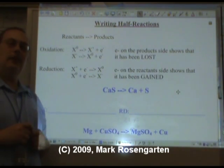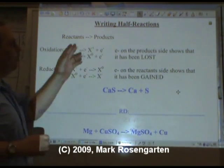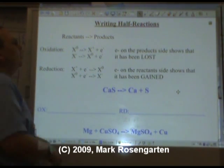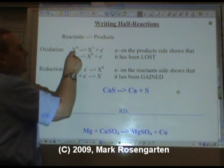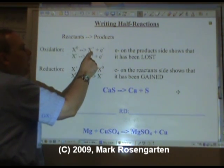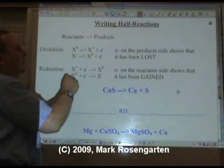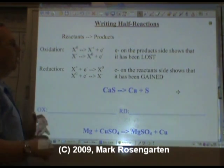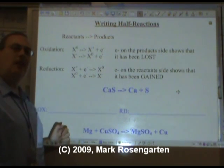Now let's take what you just learned about who's oxidized and reduced and take it one further step in writing half-reactions. Reactants turn into products. In oxidation, the reactants have a smaller charge than the products do — charge becomes more positive by losing electrons. X is negative; it turns to zero by losing electrons. The electrons are placed on the product side to show that they've been lost.